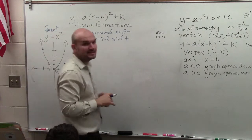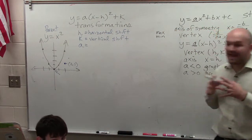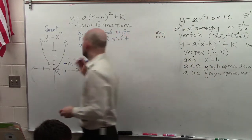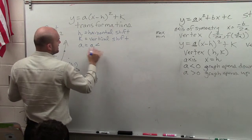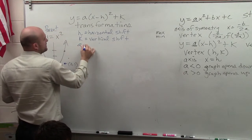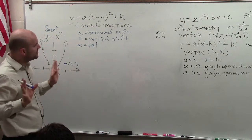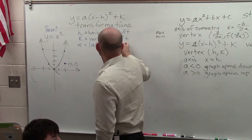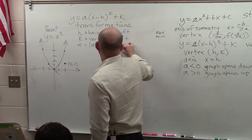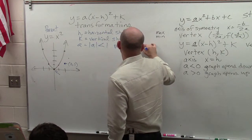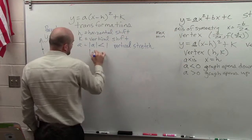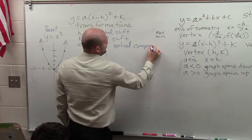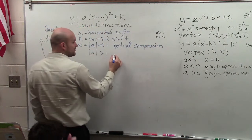And a is going to be if your graph is going to be condensed or compressed or stretched horizontally or vertically. So when we look at this, when the absolute value of a—remember, forget about the positive or negative—when the absolute value of a is going to be less than 1, then we are going to have a vertical compression. And when the absolute value of a is greater than 1, then you're going to have a vertical stretch.